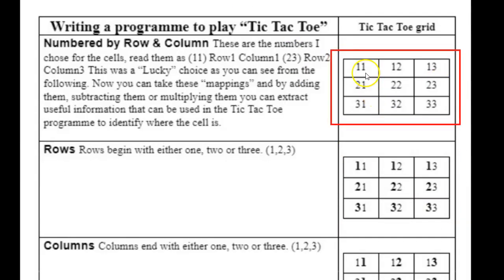With this setup, having the row and column information contained in the image control's name, you can go through it with some code and identify if a row is full, a column is full, or a diagonal is full. That's the next step in developing this tic-tac-toe game.